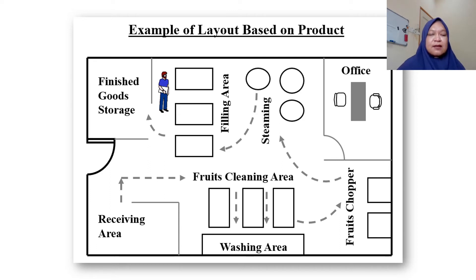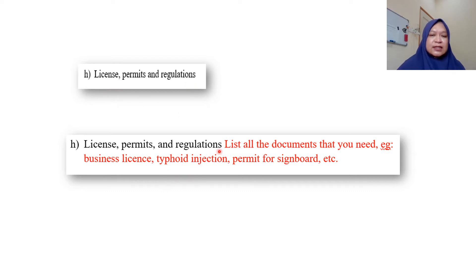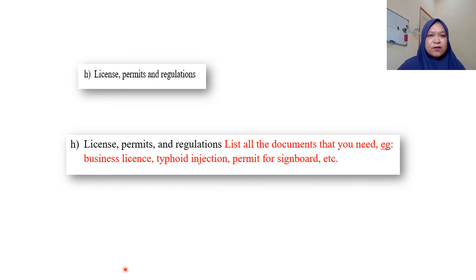Next we have H: Licenses, Permits, and Regulations. You only need to list all the documents that you need — for example, a business license, the type of inspection unit permits, and so on. No need to explain or attach the documents, just list them out.